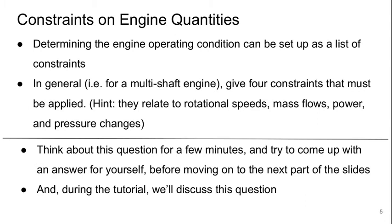Before we move on, let's think about some constraints on the engine quantities. Determining the engine operating condition can be set up as a list of constraints. In general, for example for a multi-shaft engine, try to come up with four constraints that have to be applied — related to the rotational speeds, the mass flows, the power, and pressure changes. Take a minute and think about this and try to come up with these four constraints yourself before you move on to the next part of the video. We'll also take this up in the next tutorial.